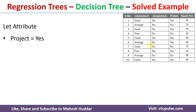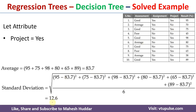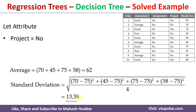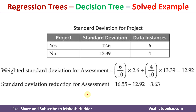The same process is applied for the third attribute, project, which also has two possibilities: yes and no. When project = yes, the standard deviation is 12.6; when project = no, it is 13.39. The weighted standard deviation = (6/10 × 12.6) + (4/10 × 13.39) = 12.92. The standard deviation reduction for project = 16.55 − 12.92 = 3.63.